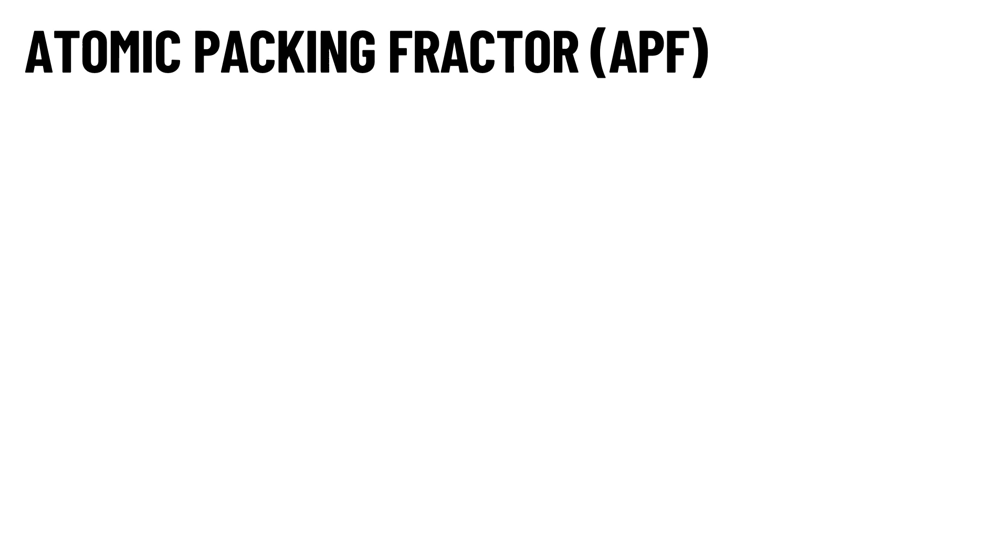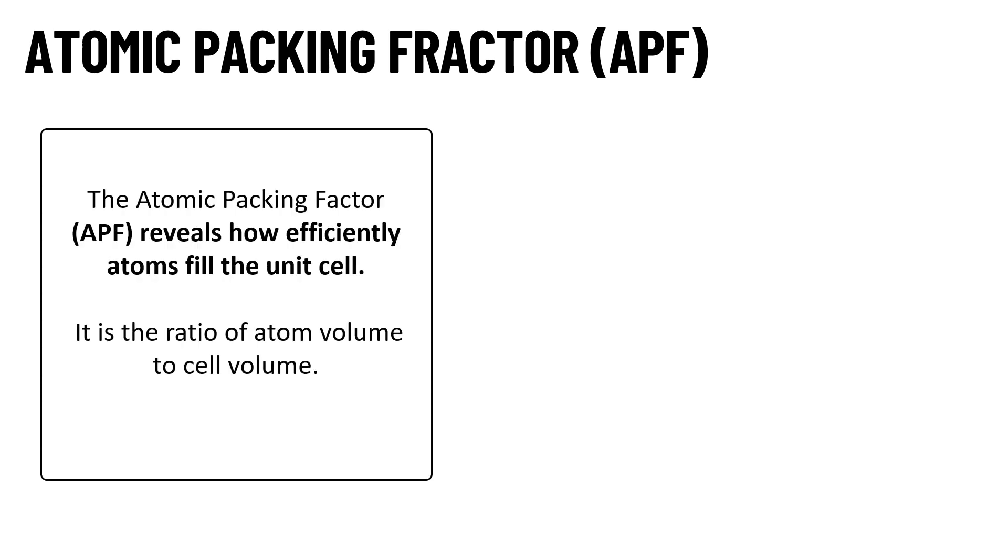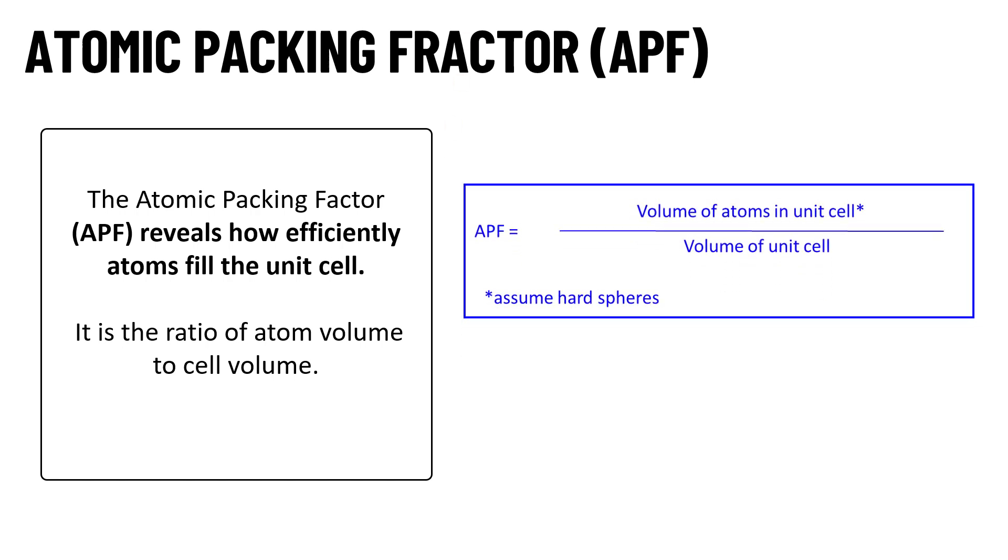The main thing here is atomic packing factor. The atomic packing factor reveals how efficiently atoms fill the unit cell. It is the ratio of atom volume to the cell volume. Formula for APF is equal to volume of atoms in unit cell divided by volume of unit cell. We need to consider that each atom is nothing but a hard sphere. Now let us calculate APF for BCC structure.